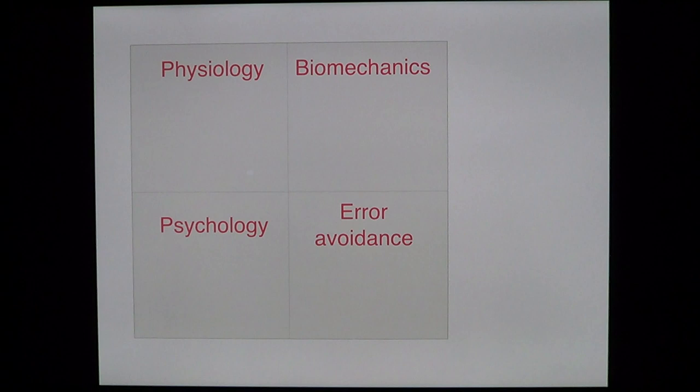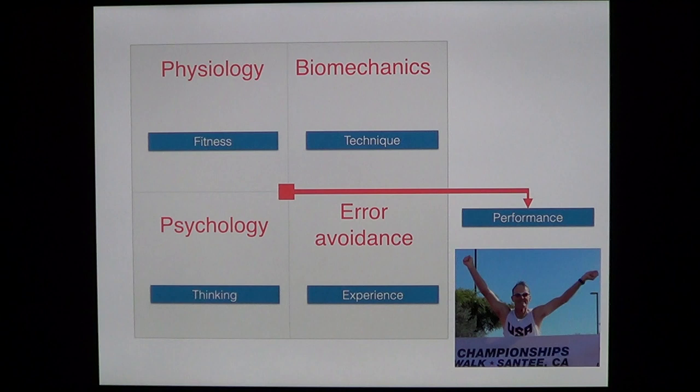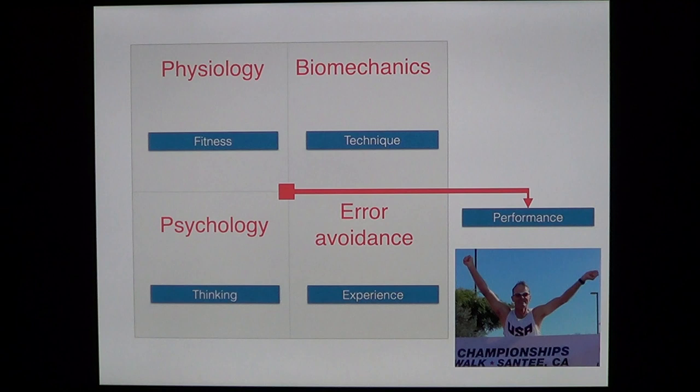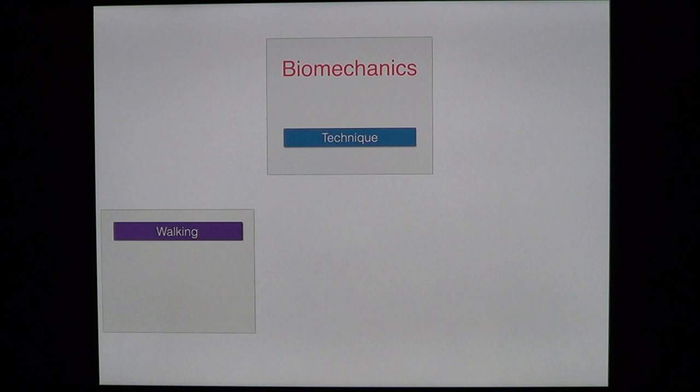When we discuss coaching for race walking, we have four things that we can control: the physiology, the biomechanics, the psychology, and the error avoidance of an athlete. We can't control their genes. Physiology is the physical fitness of the athlete, biomechanics is their technique, psychology is their thinking or mental approach to sport, and error avoidance you can put down to experience. We put all of these factors together and it gives us an end performance. Today we're going to focus on biomechanics — the technique of race walking.